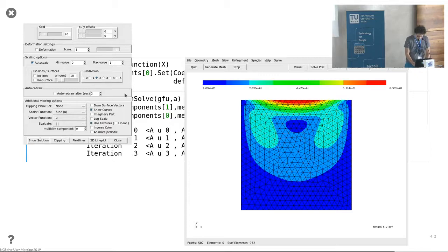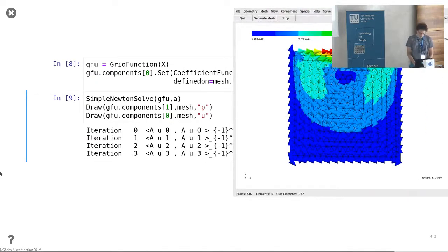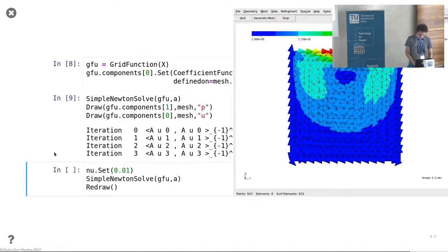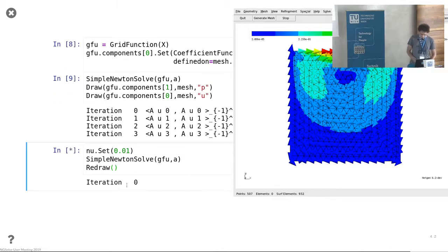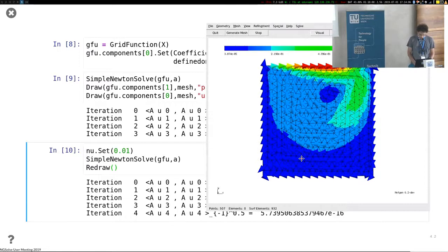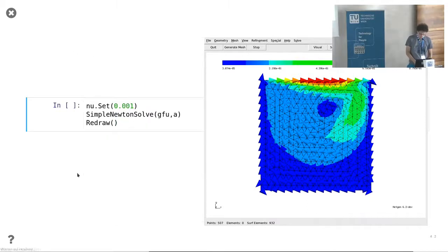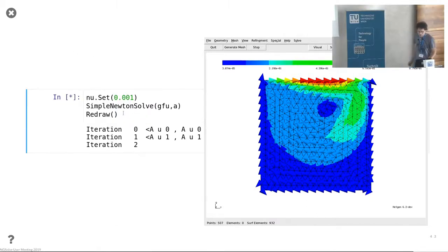We could also take a look at the velocity field. This is for a relatively high viscosity, so let's make it more complicated. We decrease the viscosity, solve the same problem again. We need a few iterations, so now it's one iteration more. It's obviously more convection dominated now but still not too challenging.